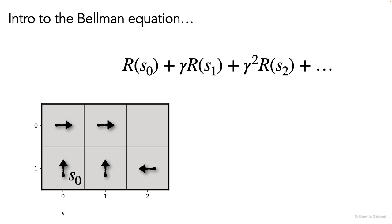That's the one comma zero state. And under the current policy, the agent is told to move up. So the next state s one is zero comma zero. Then the agent moves right, so s two is zero comma one, and so on.